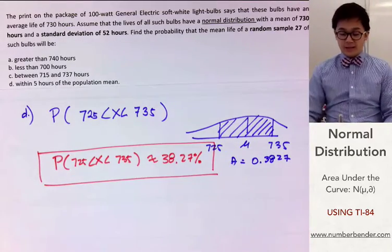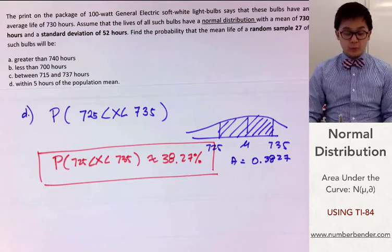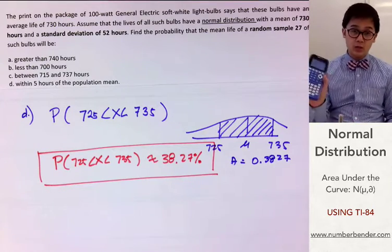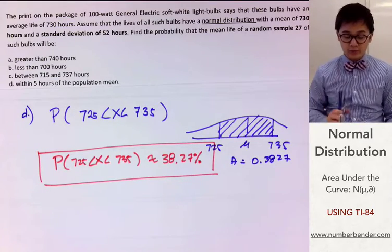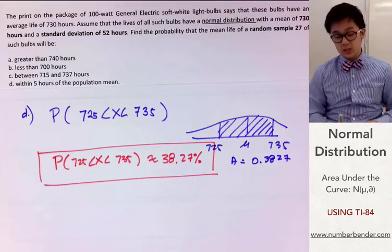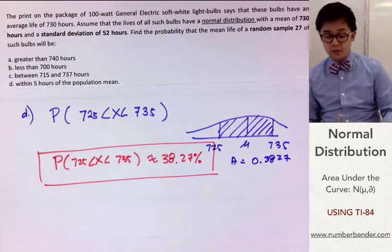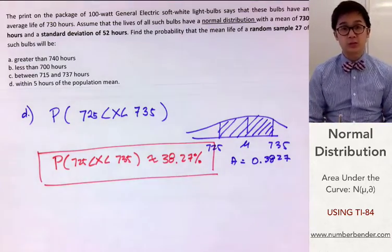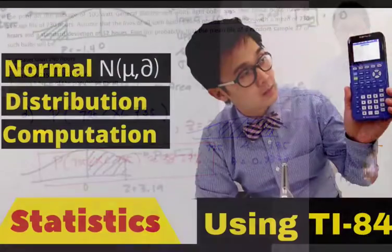And that is how we use the TI-84 to compute the area under the normal curve, or the probability using a normal distribution.